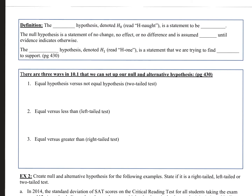The null hypothesis, denoted H₀, is a statement to be tested. It is a statement of no change, no effect, or no difference, and is assumed true until evidence indicates otherwise — like 'innocent until proven guilty.' In our coin example, H₀ is that the coin is fair, so we used exactly a 50% probability of tails. If our friend were cheating, they'd be using a weighted coin with an unfair probability.